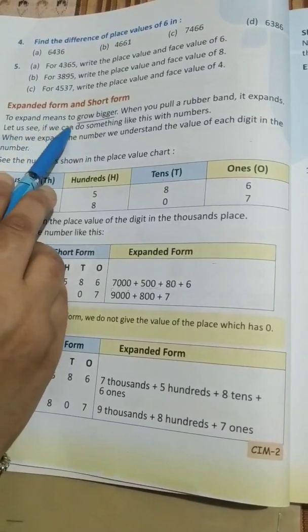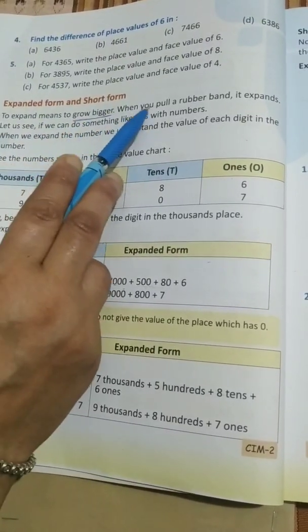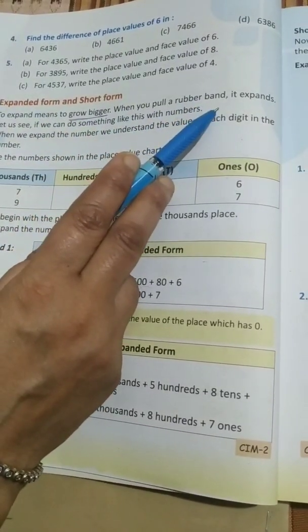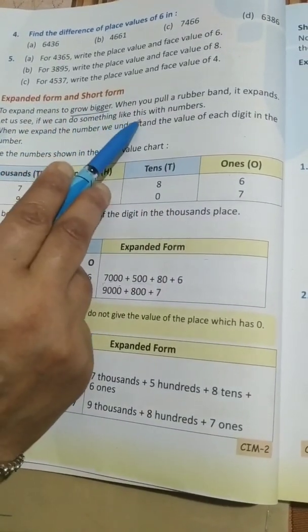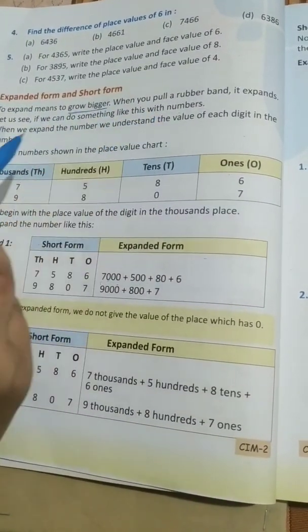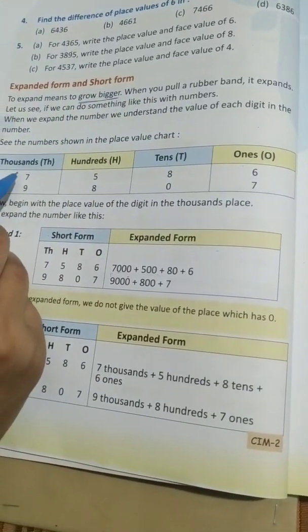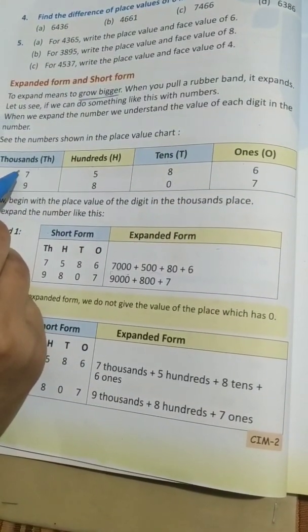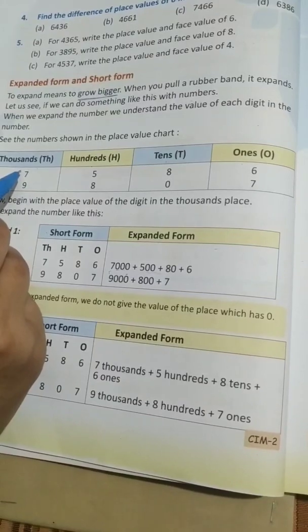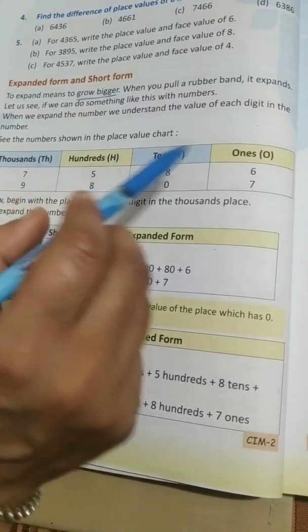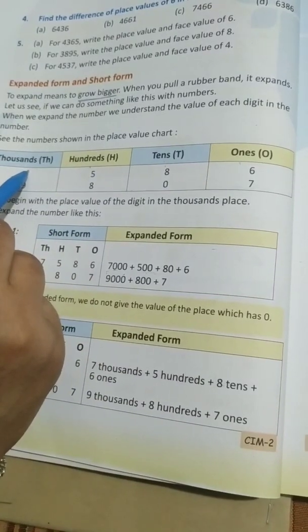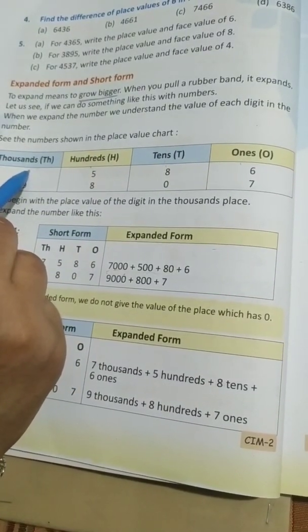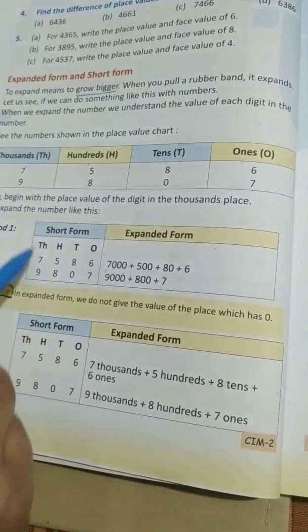To expand means to grow bigger. When you pull a rubber band, it expands. Let us see if we can do something like this with numbers. When we have to expand a number, we have to write all the digits according to their place values — 1, 10, 100, 1000. Then, according to the places given to each digit, we have to write the numbers in numeral form.